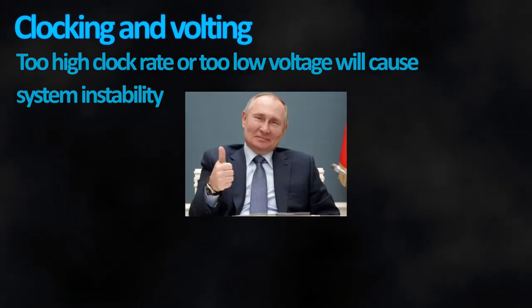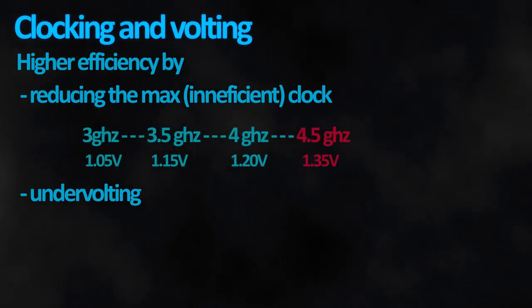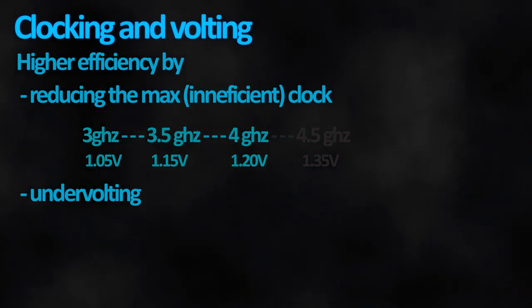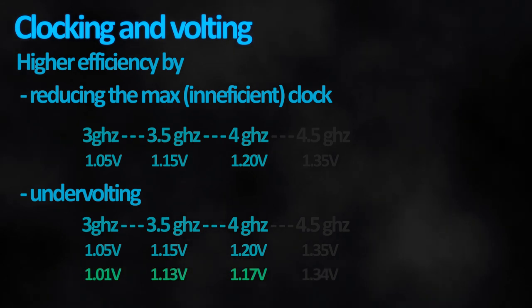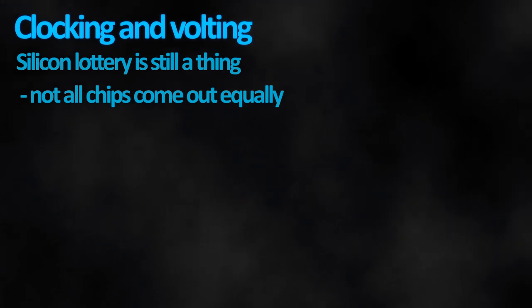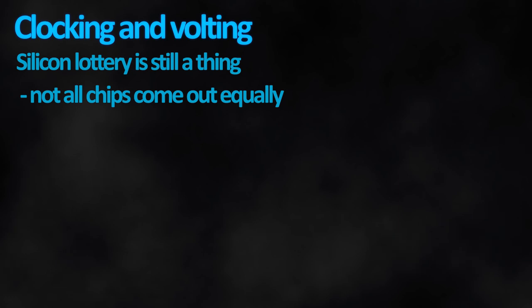In theory, you could achieve higher efficiency by underclocking your chip — letting it work at lower frequency, thus avoiding the inefficient performance levels — and combine it with undervolting, which would make all remaining performance levels require less power. Keep in mind, due to the way a chip is manufactured, you might have an amazing variant capable of high overclocks or low undervolts, but you also might have a chip that will crash at the smallest change. It's pretty much luck — the silicon lottery.